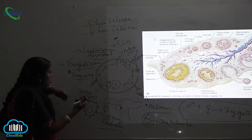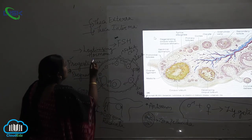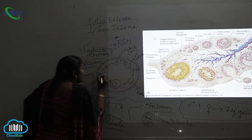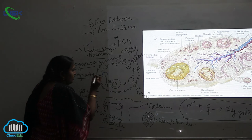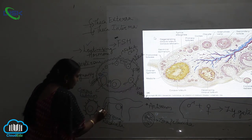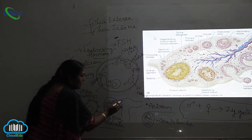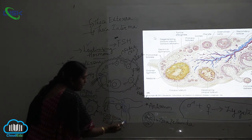If fertilization does not occur, in the presence of luteinizing hormone the egg is released and travels through the fallopian tubule. Since fertilization does not occur, through the endometrium of the uterus, uterine bleeding will occur.